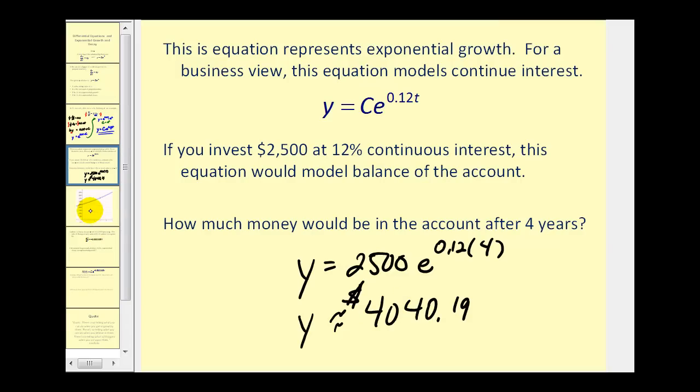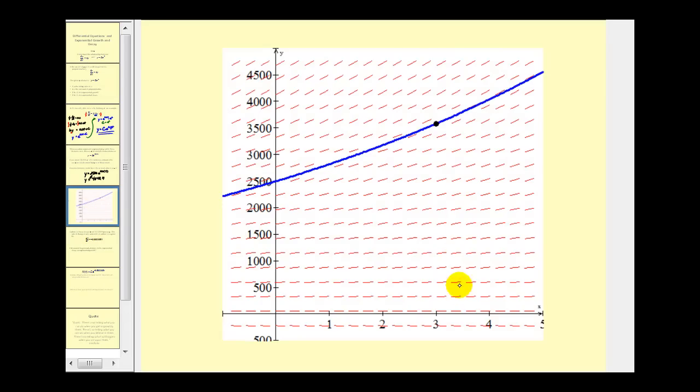Let's take a look at the graph of that. Here we see the graph of the slope field from the differential equation and then in blue we have the particular solution when the initial investment amount was $2,500. If we invest for four years, we go out to x equals four and then go up to the function; here's that value that we found of $4,040.